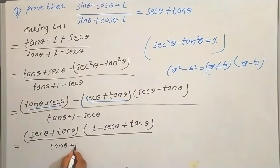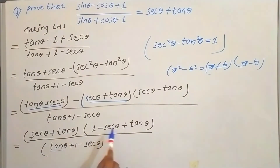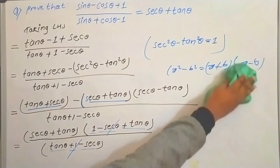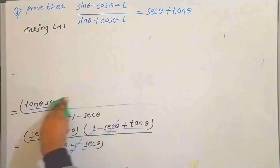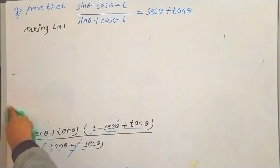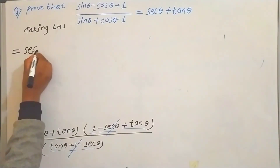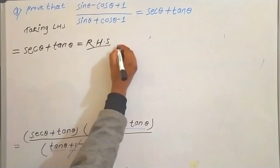The denominator is tan θ + 1 − sec θ. We look for common terms. In the numerator we have (sec θ + tan θ)(sec θ − tan θ) and in the denominator tan θ + 1 − sec θ. This term is common and can be cancelled, giving us sec θ + tan θ, which is our right-hand side. Hence proved.